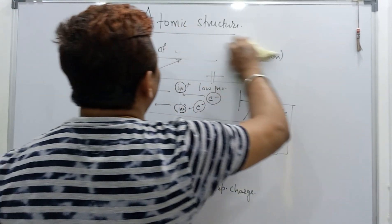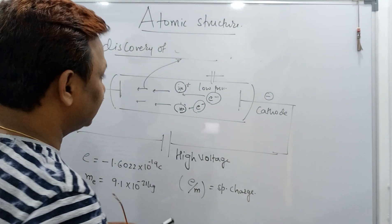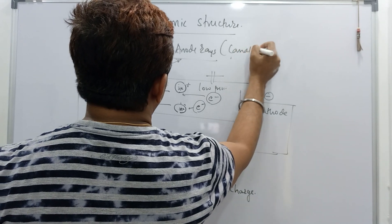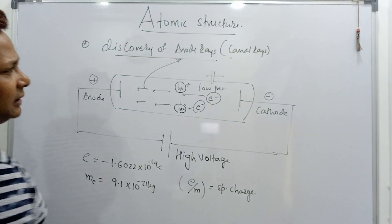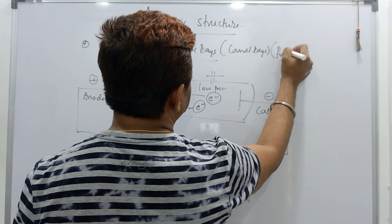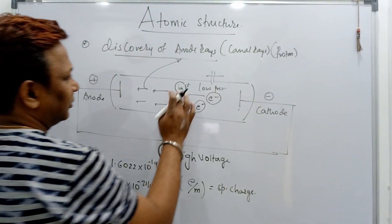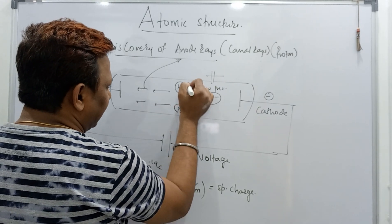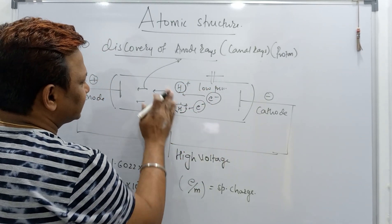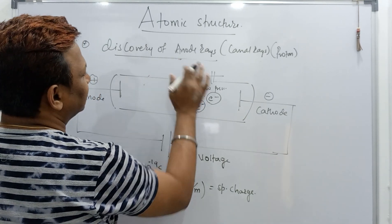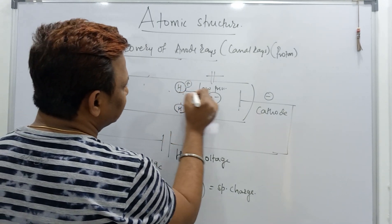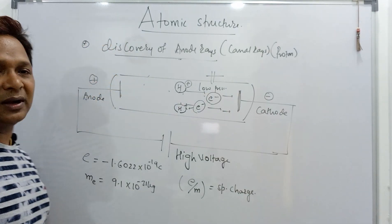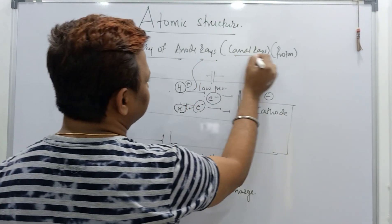The second discovery is the anode rays, also called canal rays, because they pass through canals. These carry the discovery of positive particles called protons. Taking hydrogen: the molecule converts to atom, then ionizes to give H⁺ and an electron. The positively charged H⁺ particle is attracted toward the cathode plate. These are called anode rays, canal rays, or protons.